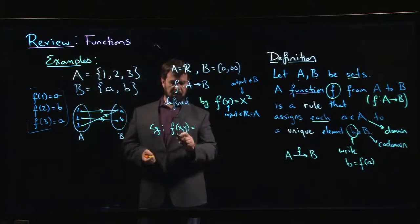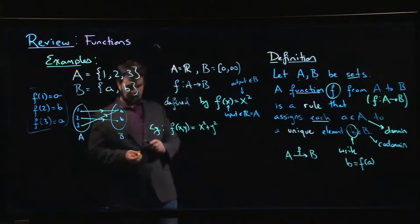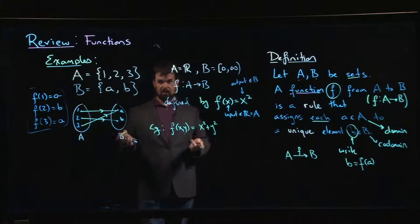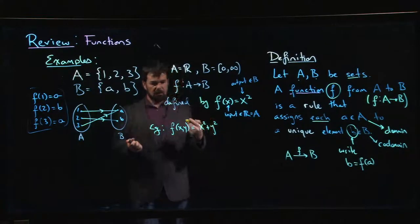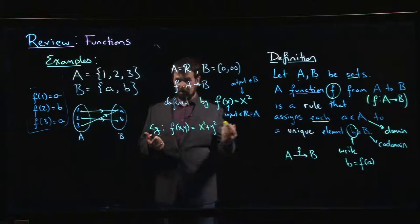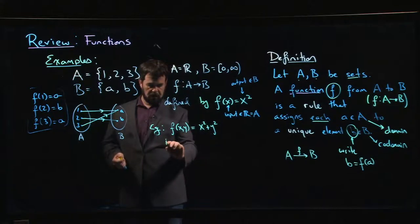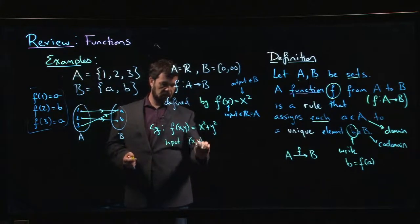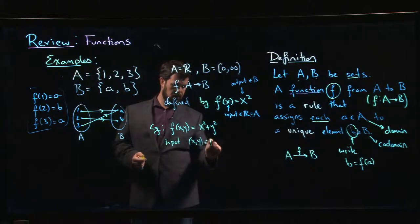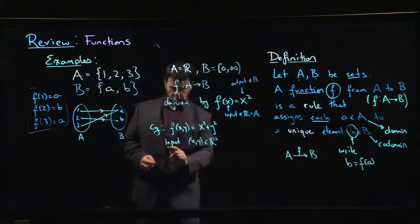You might see something like f(x,y) equals x² plus y². It looks like you have two inputs - there's an x and a y. In calculus we usually refer to this as a function of several variables, but we can always think of the input here as the ordered pair, which is an element of the plane, of R².